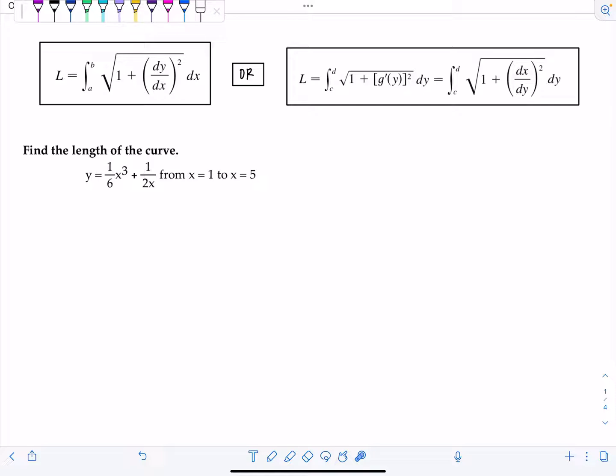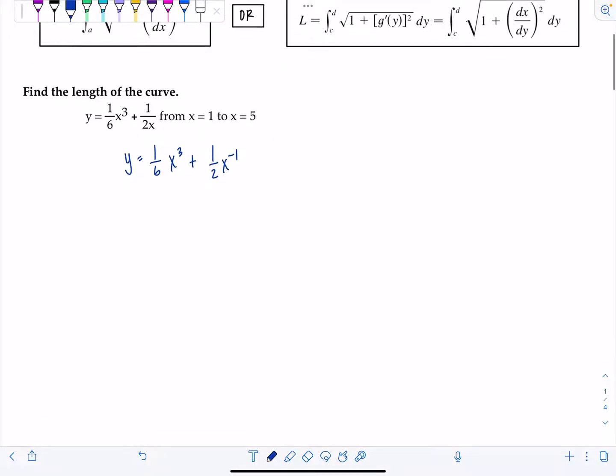I like to get everything ready to integrate before I write out my full integral. So I like to take the derivative, square it, add one, clean it up as much as possible and then write out my full integral. Before I take the derivative I'm going to rewrite my function y. So I'm going to write this as one half x to the negative first.